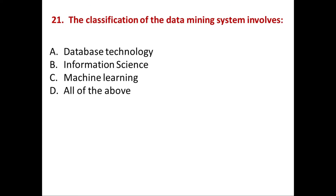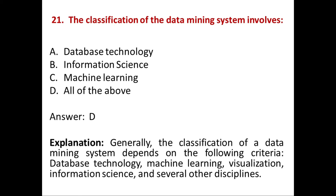Next question: The classification of data mining system involves? Option A: Database technology. B: Information science. C: Machine learning. D: All of the above. Answer is Option D, All of the above. Generally, the classification of a data mining system depends on: Database technology, Machine learning, Visualization, Information science, and several other disciplines. So the answer is Option D, All of the above.